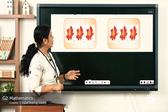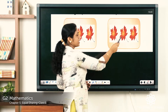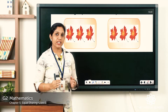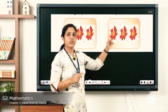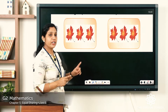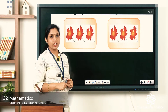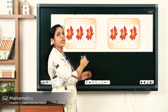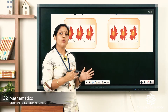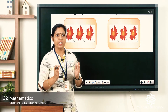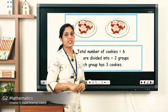Look at this picture — you can see some leaves. How many leaves are there? One, two, three, four, five, six — there are six leaves in total. They are equally divided into two groups. Each group has one, two, three leaves — the same number in both groups. So we can say it is equally divided, or equally shared.